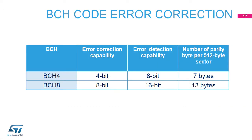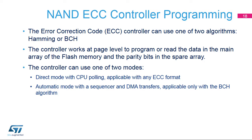To increase the error correction capacity, the FMC embeds a BCH, or Bose-Chowdhury-Hocquenghem, encoder and decoder. It supports either 4-bit error correction with 8-bit error detection per sector, or 8-bit error correction with 16-bit error detection per sector. The BCH encoder-decoder module handles sectors of fixed size equal to 512 bytes. The ECC controller can use one of two algorithms — Hamming or BCH — depending on the ECC requirements of the NAND Flash device.